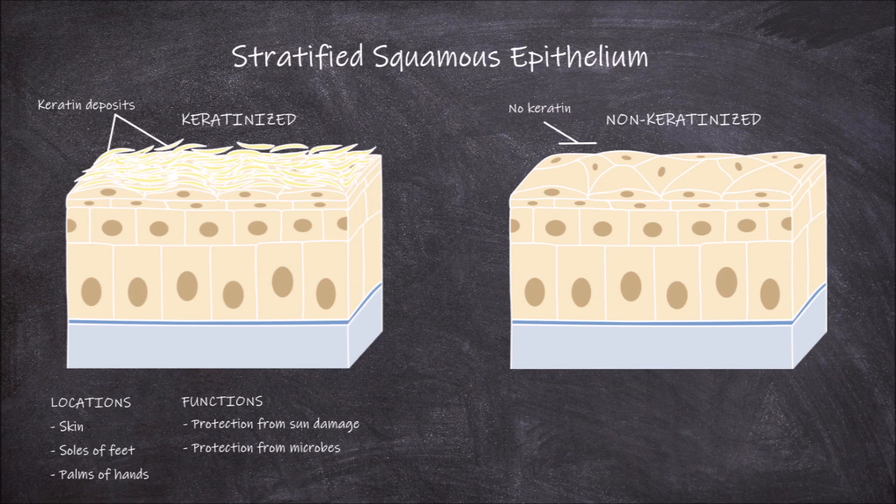Non-keratinized stratified squamous epithelium is the type that doesn't have much build up of keratin in the top layers of cells. This type of epithelium is found on the internal surfaces of organs that endure large amounts of physical stress from activities such as eating food. These tissues are kept moist by secretions from nearby glands. It is found on parts of the digestive system such as the tongue, upper palate and the oral cavity, as well as the esophagus.